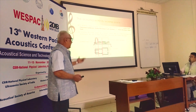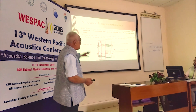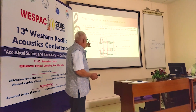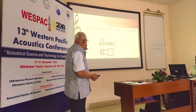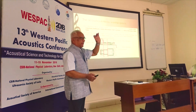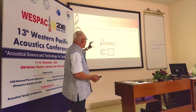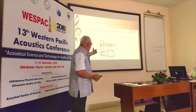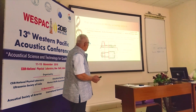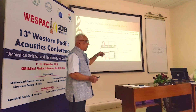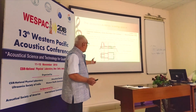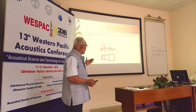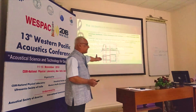In general, a temple has three chambers: the garbhagraha, the ardhamantapa, and the mahamantapa. In the garbhagraha, the idol of the deity is placed and the head priest chants Vedic mantras. In the ardhamantapa, both chanting and bell or instrumental sounds are played. In the mahamantapa, the congregation prays, accompanied by instruments.